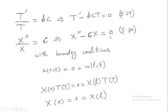From the boundary conditions u(0,t) = 0 and u(L,t) = 0, we get X(0)·T(t) = 0 and X(L)·T(t) = 0, which gives us X(0) = 0 and X(L) = 0. So the boundary conditions on X are: X(0) = 0 = X(L).